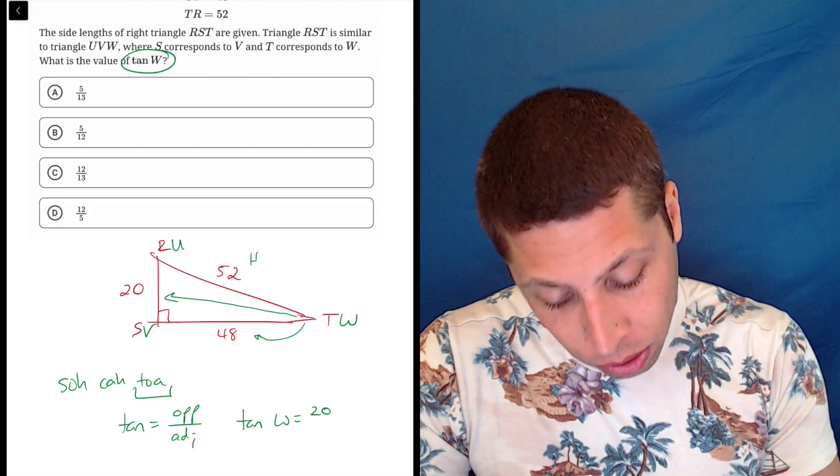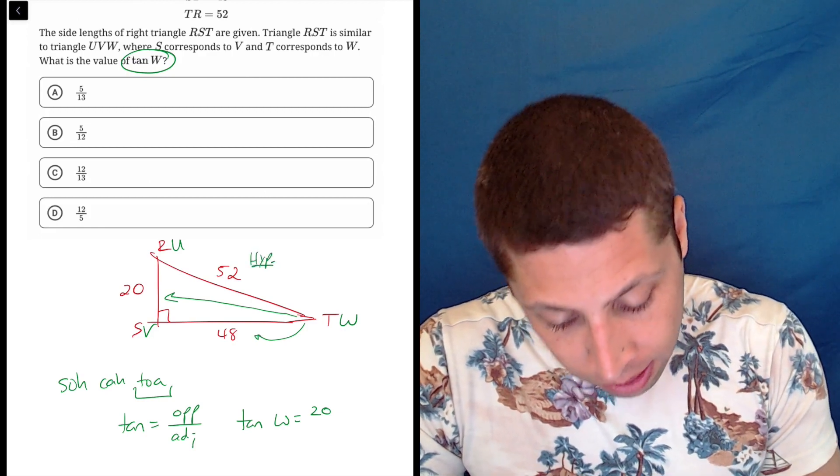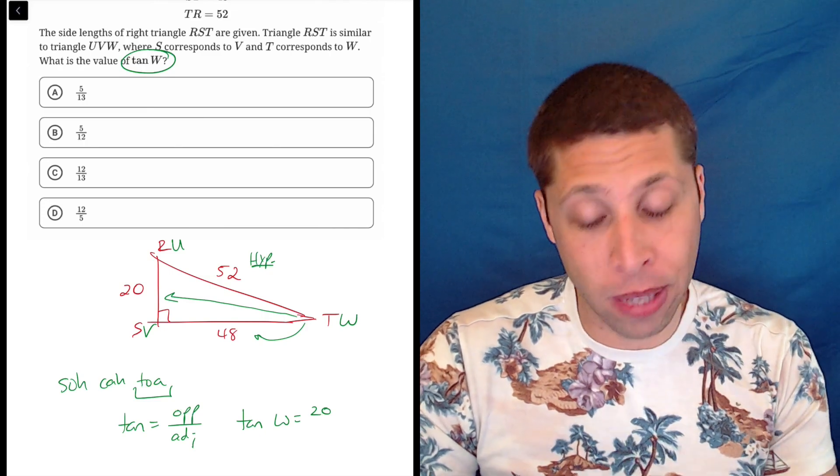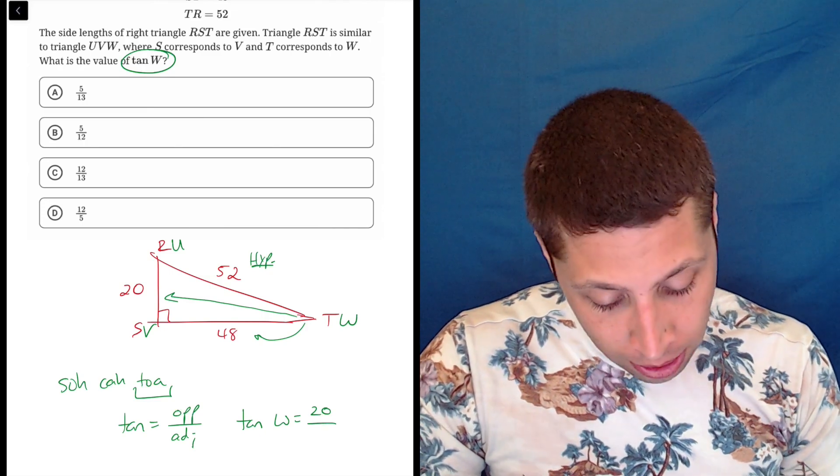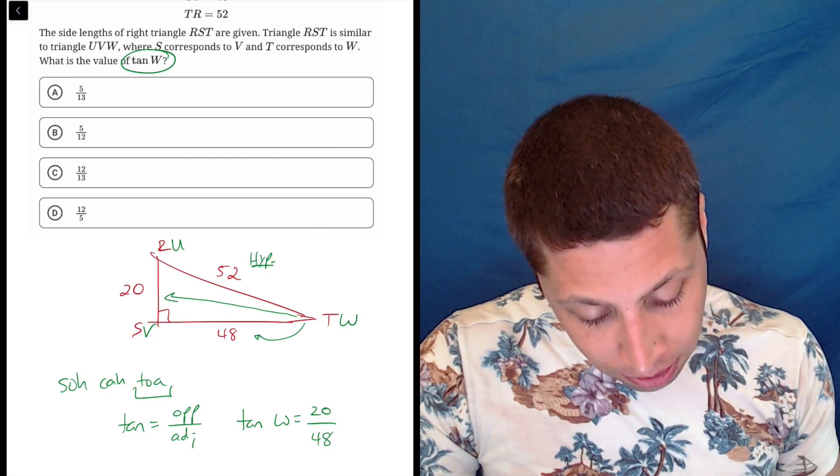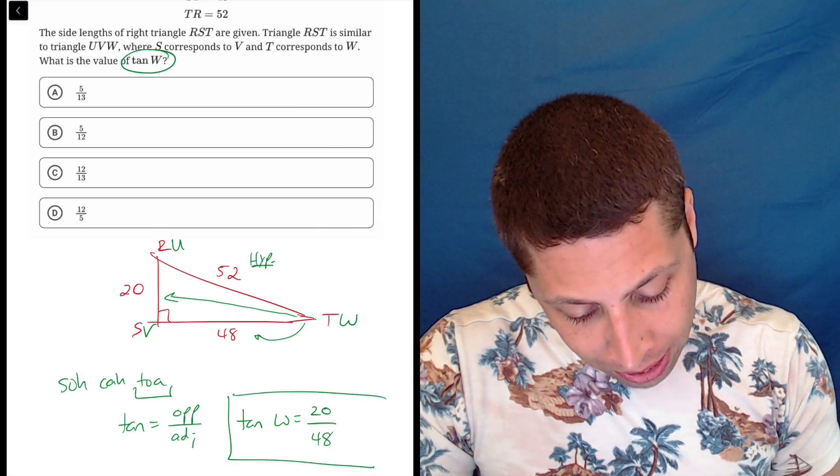And then the adjacent is going to be the one that's next to it, but not the hypotenuse, right? Hypotenuse here is 52. That has to be the hypotenuse because it's opposite the right angle. So the denominator is 48. So 20 over 48 is my answer.